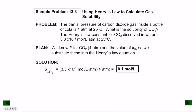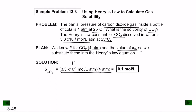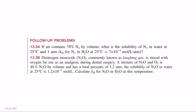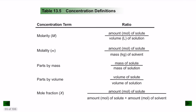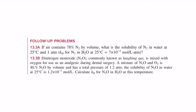Worked example using Henry's Law: The partial pressure of CO₂ inside a bottle of cola is 4 atm at 25°C, and the Henry's Law constant for CO₂ in water is 3.3 × 10⁻² mol/L·atm at 25°C. Solubility = k_H × P = 3.3 × 10⁻² × 4 = 0.13 mol/L. In the next lecture, we will continue with concentration terms, colligative properties, and colloids.